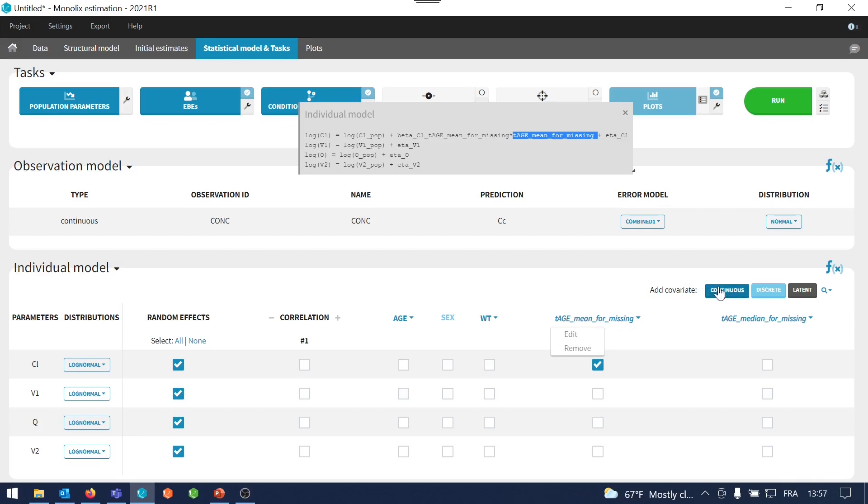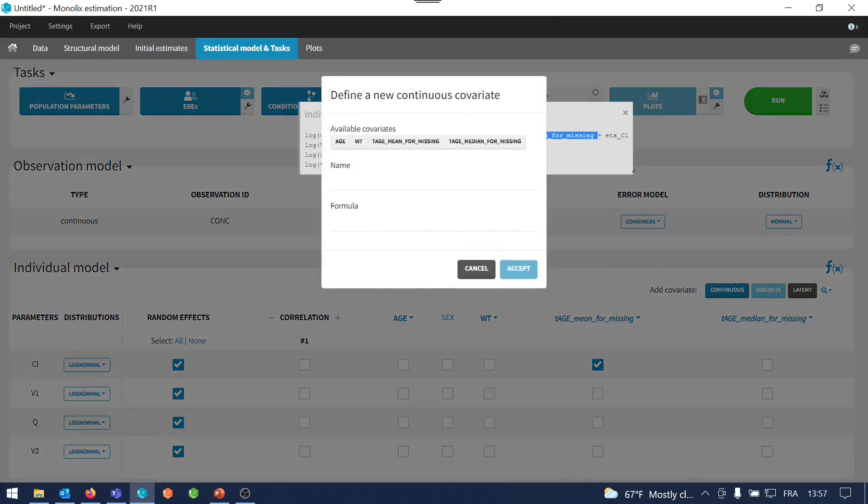But I can again use Add continuous covariate and further transform the covariates that I created, because they are now available for use in this formula box. Be careful that the statistics here are impacted by the value that I imputed. So you should compute the typical value that you want to use outside of Monolix using only the remaining IDs.